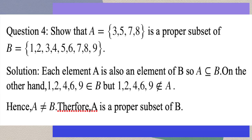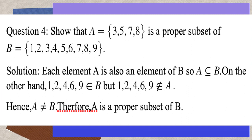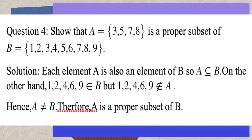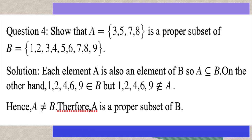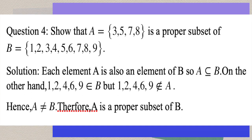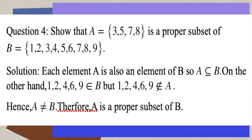Question 4: Set A = {3, 5, 7, 8} and B = {1, 2, 3, 4, 5, 6, 7, 8, 9}. Show that A is a proper subset of B. Each element of A — 3, 5, 7, 8 — also belongs to B. So every element of A is an element of B, meaning A is a subset of B. Also A ≠ B, so A is a proper subset of B.